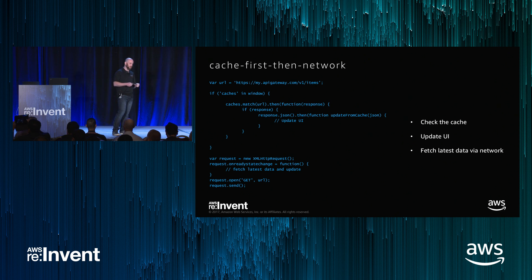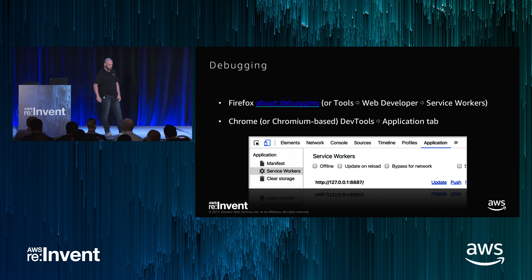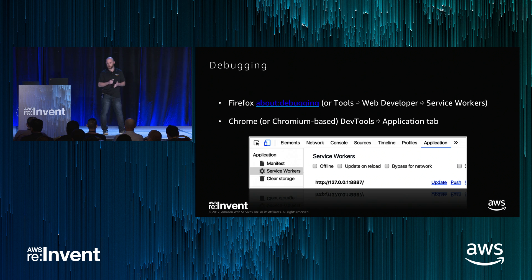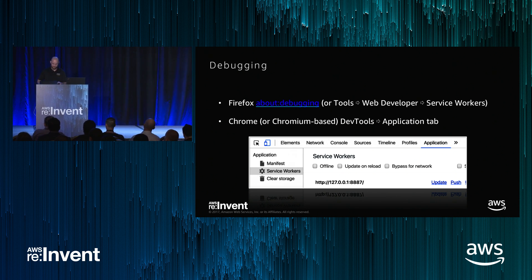If you are offline, you can always know that and fire events that update the UI — even say there's no network connection, which you may have seen in some apps. In terms of debugging, there's a lot of support now in the latest browsers. Firefox has a debugger specifically for service workers. Chrome or any Chromium-based browser has a dev tools application tab that allows you to debug the service worker. You can add breakpoints, step through the code, see if it's been updated or activated, and inspect the database data in IndexedDB. It's pretty powerful.